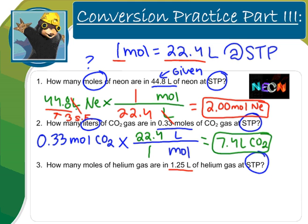So the 1.25 liters is my given, and moles are unknown. So I'm starting with 1.25 liters of helium. Liters have to go on the bottom. Moles have to go on the top.